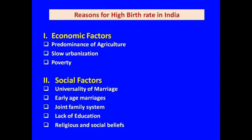We have discussed the reasons for declining death rate in India. Now we will discuss the reasons for high birth rate. The reasons for high birth rate can be divided into two parts: economic factors and social factors. Economic factors are predominance of agriculture, slow urbanization, and widespread poverty. Social factors are universality of marriage, early age marriages, joint family system, lack of education, and religious and social beliefs.